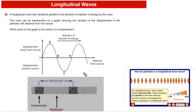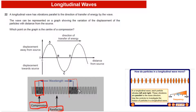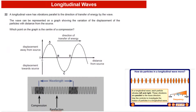In this region, particles are close together — we call this compression. In the next region, particles are away from each other — that region is called rarefaction. Then again compression, and the distance between two compressions or two rarefactions is called the wavelength.